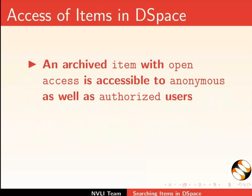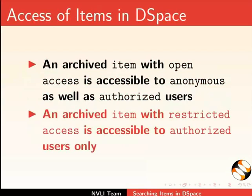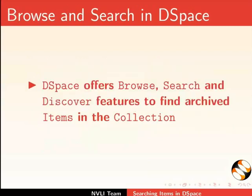An archived item with open access is accessible to anonymous as well as authorized users. An archived item with restricted access is accessible to authorized users only. DSpace offers browse, search, and discover features to find archived items in the collection.